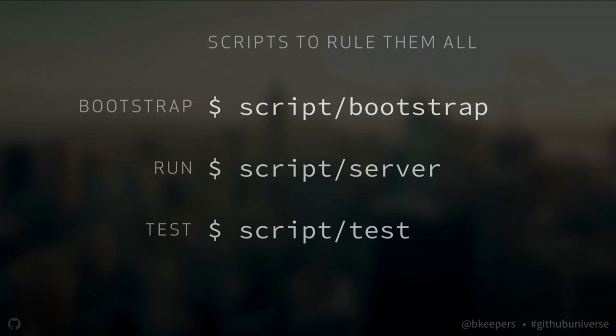We also reduce friction by automating. Every project inside the GitHub organization that has executable code generally has three scripts: script bootstrap, script server, and script test — regardless of whether it's a Node, Ruby, or C project. You can clone the repo, run script bootstrap to set up your environment, run script server to run the code, and script test to run the tests. This allows me to clone any Node project at GitHub, make changes, run tests, and submit a pull request — even without deep familiarity with Node development.